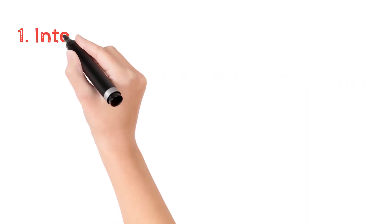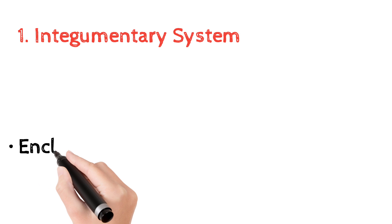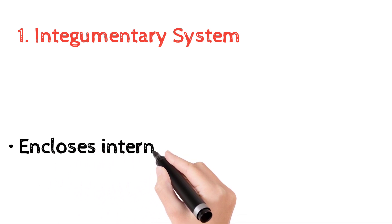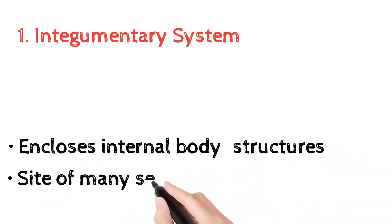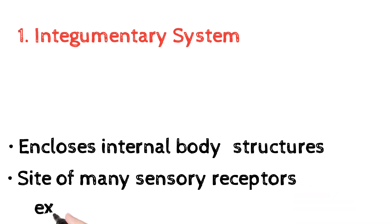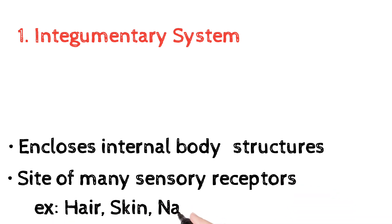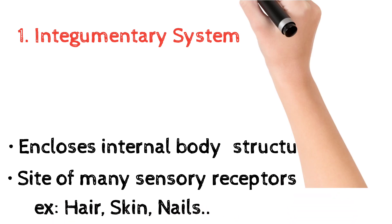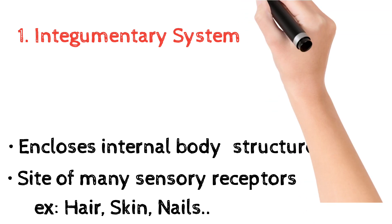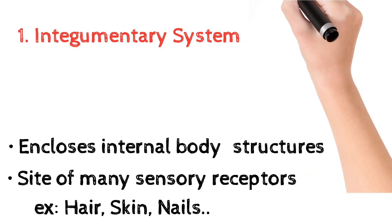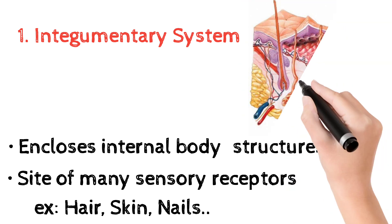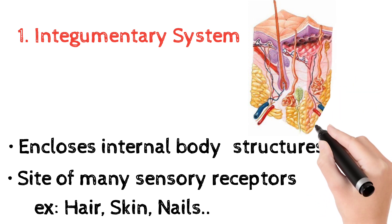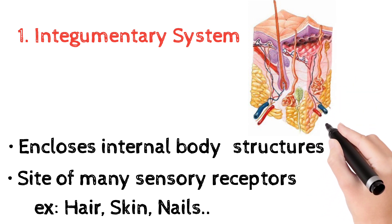The first one is the integumentary system, which encloses internal body structures and is the site of many sensory receptors. Examples include skin, hair, and nails. The skin plays a role in sensory actions and sensing the environment.